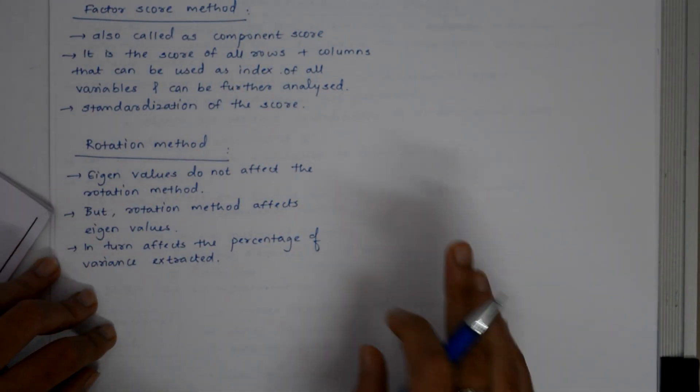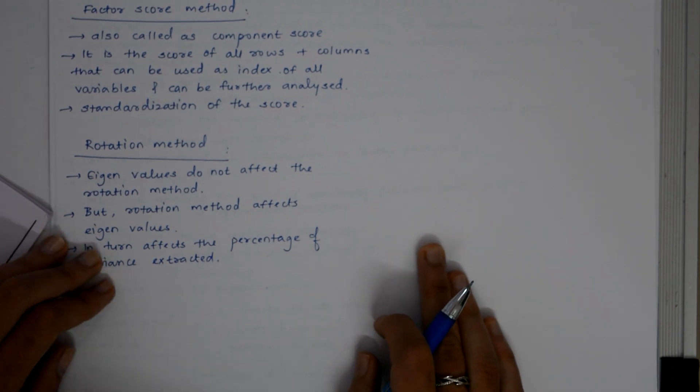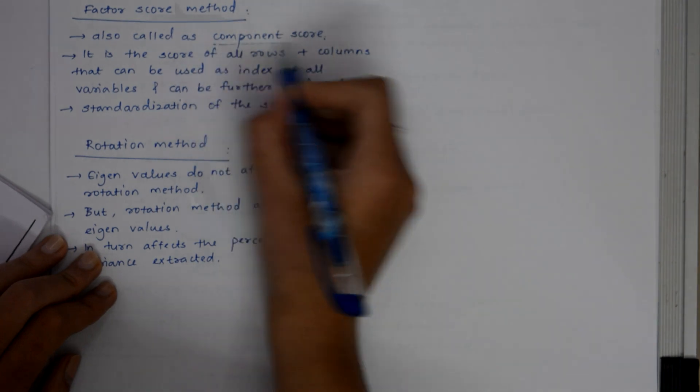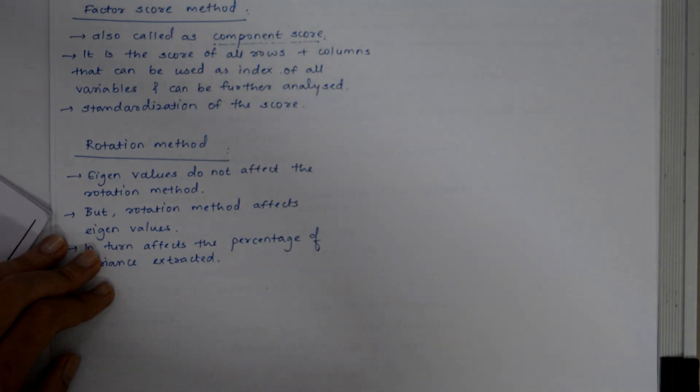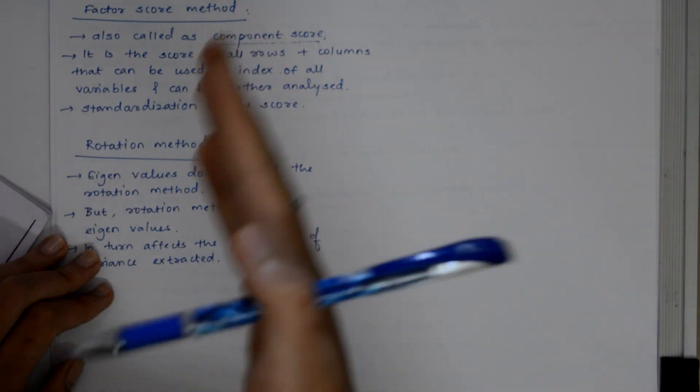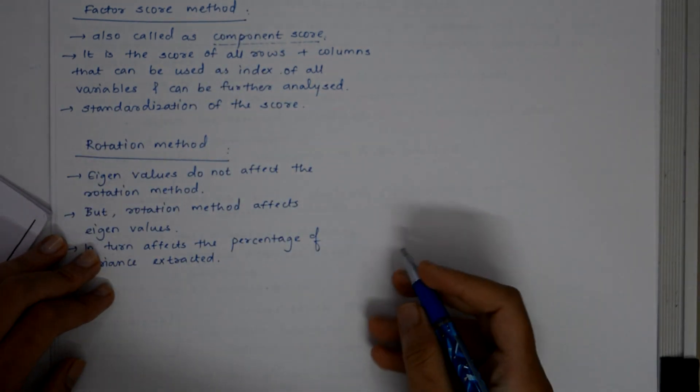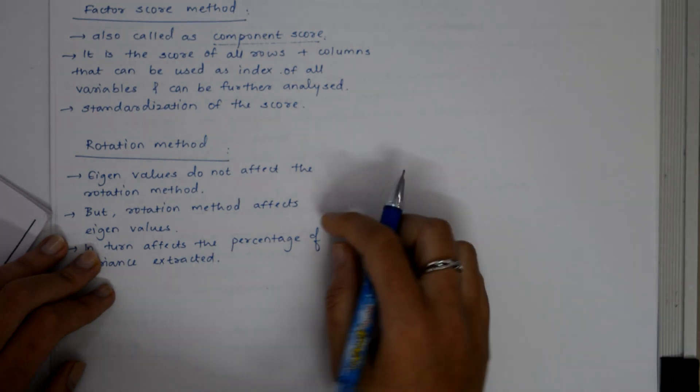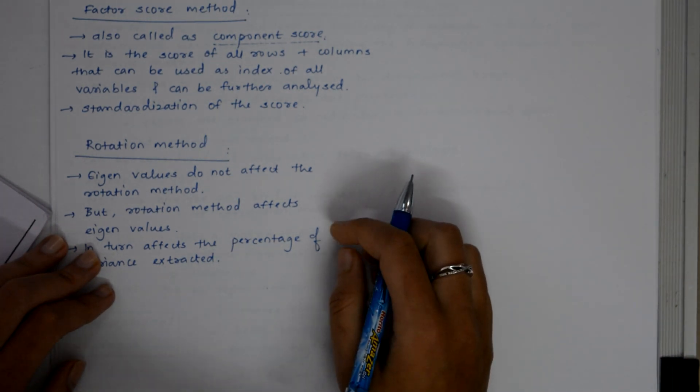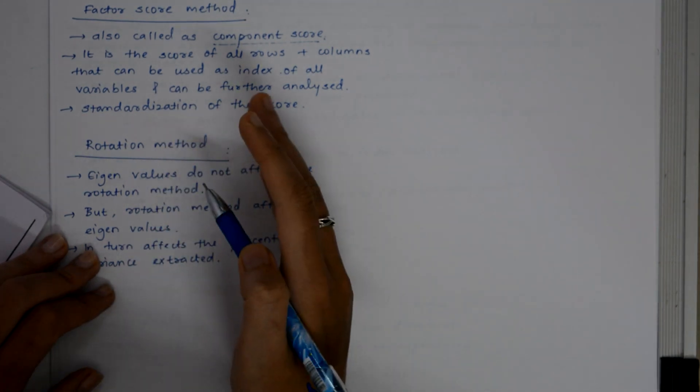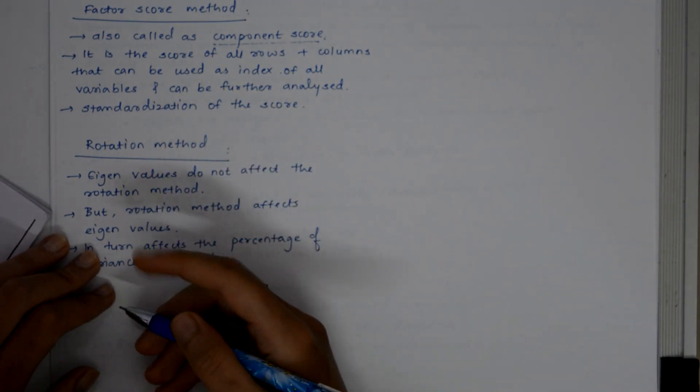Next is the factor score method. The factor score method is also called the component score method. This score is of all the rows and columns which can be used as an index of all the variables and can be used for further analysis. With this factor score, whatever analysis we will do, we will assume that all the variables...